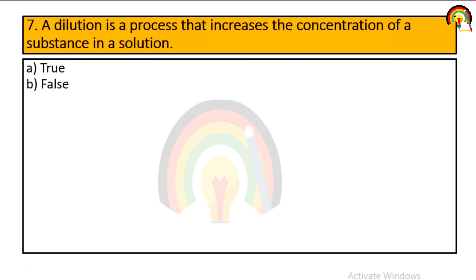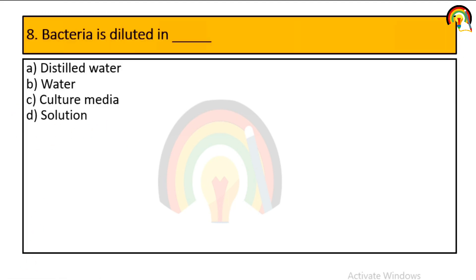A dilution is a process that increases the concentration of a substance in a solution — is that true or false? It's false. Bacteria are diluted in distilled water, water, culture media, or solution? Bacteria are diluted in culture media, which is option C.